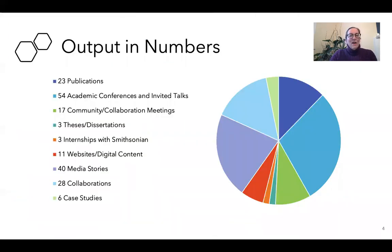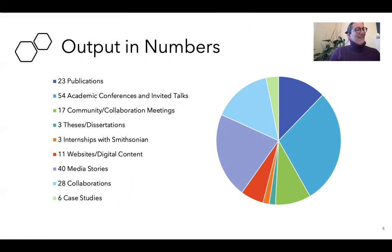It's not surprising — it was a really talented group of people, 18 months, and a lot of people working on these research questions — that we had quite a bit of what would be traditional output or product from the research. This gives you a taste: 23 publications, 54 academic conferences and invited talks, three theses and dissertations, internships at the Smithsonian, and so on.